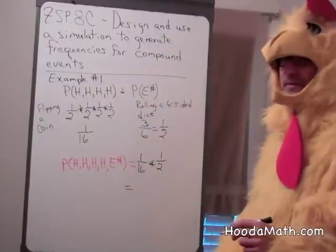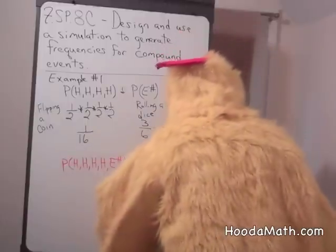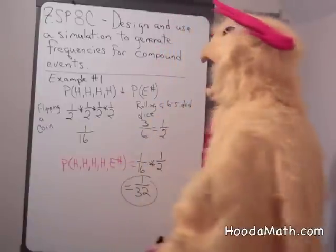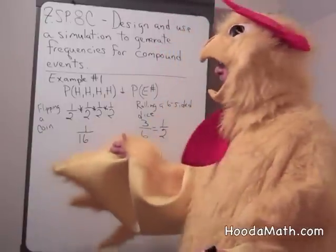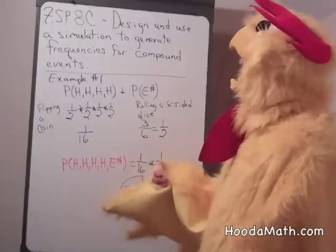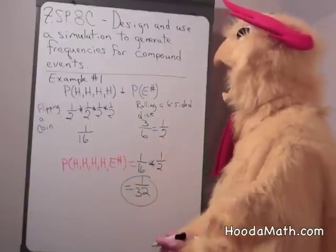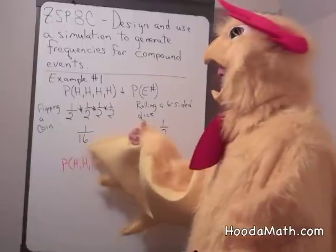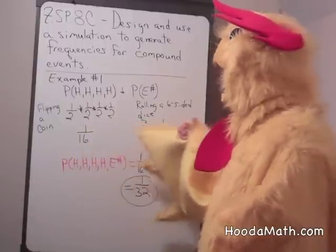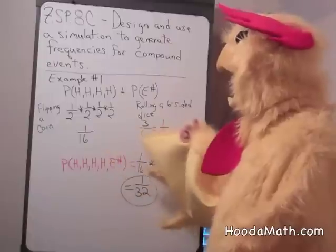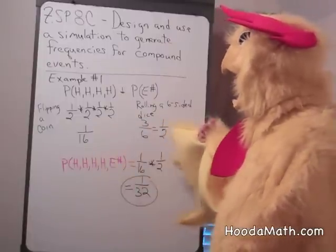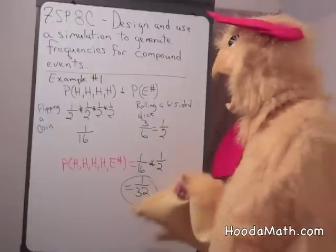Any ideas? Somebody out there knows. 1/32nd. Remember that if you have a compound event, then you multiply the probability, which is between 0 and 1, times another probability, which is between 0 and 1. And you get a fraction of what either probability is or a number smaller.